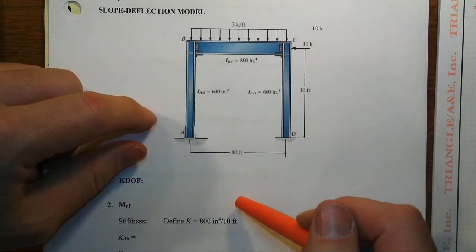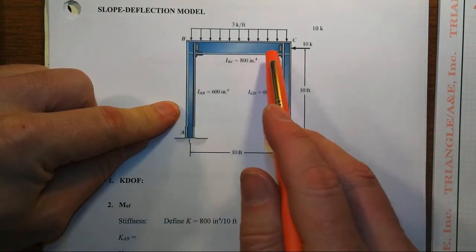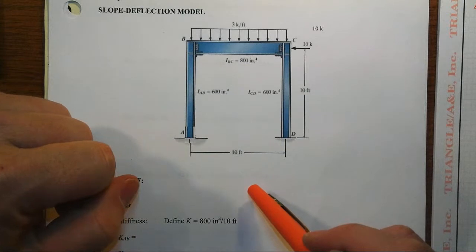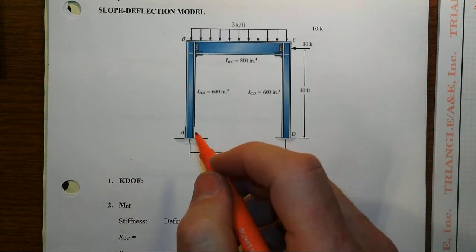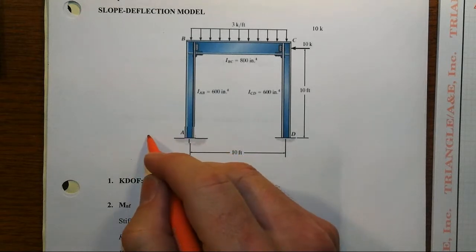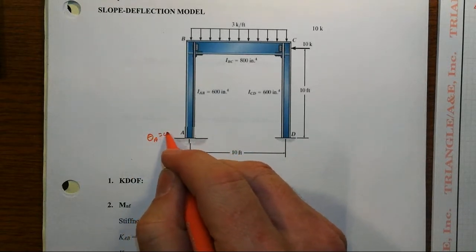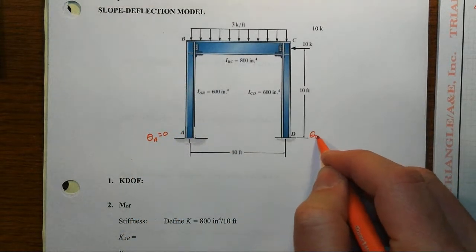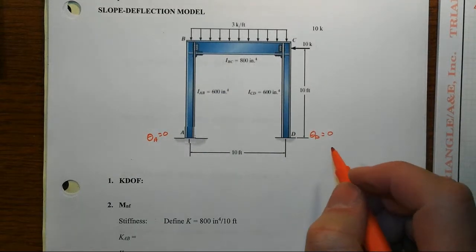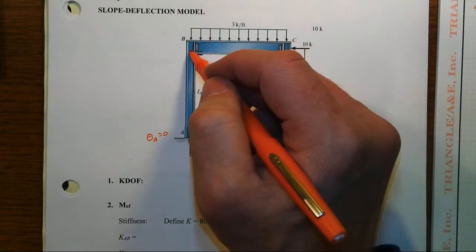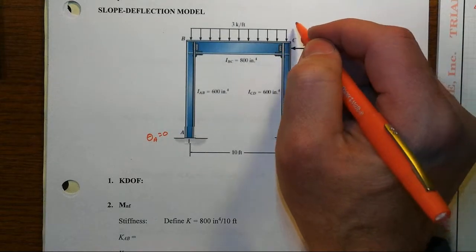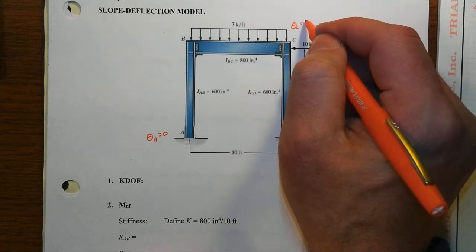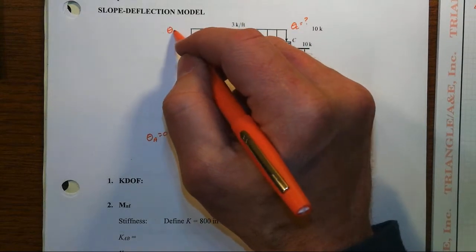Let's take a look here at what's going on. In the slope deflection method, remember, we've got to look at the various members and figure out which ones we know the member end displacements and where do we not. At A, we know that theta A is going to be zero because of the fixed end, theta D is also equal to zero, but B and C are free to rotate, meaning there's no external constraints that prevent them from rotating.